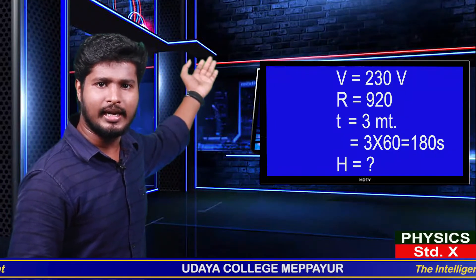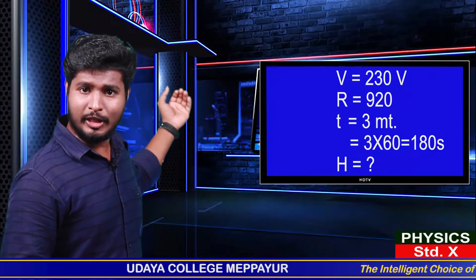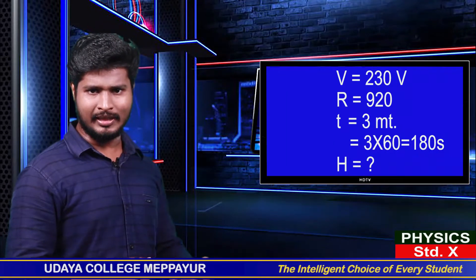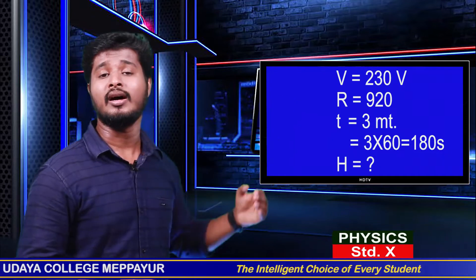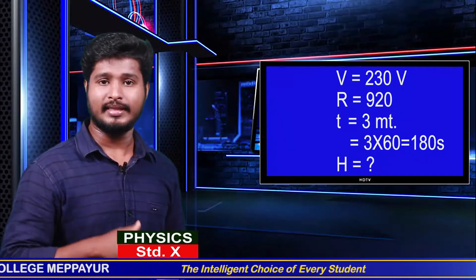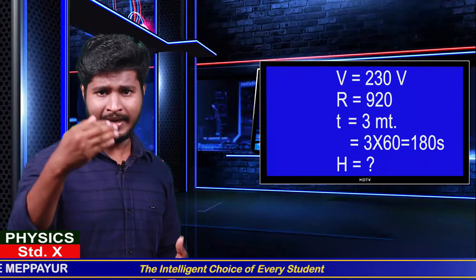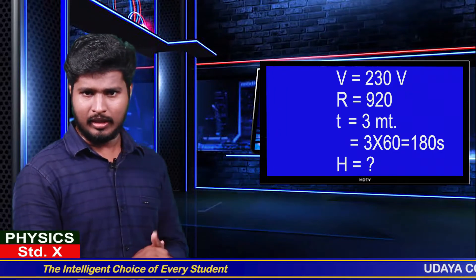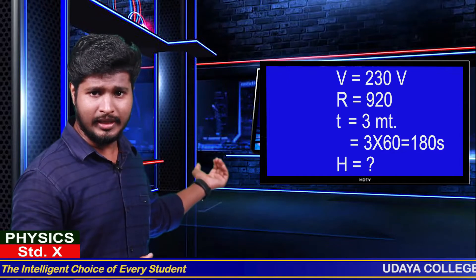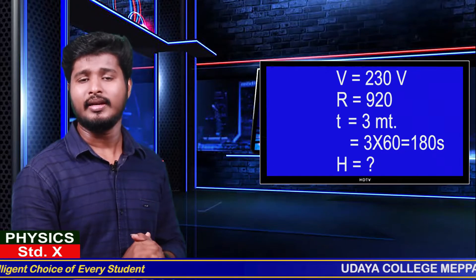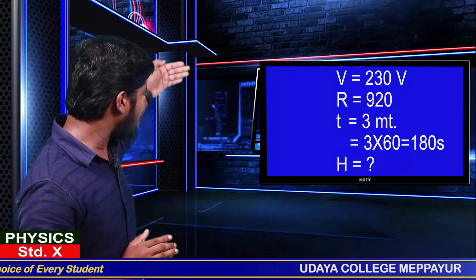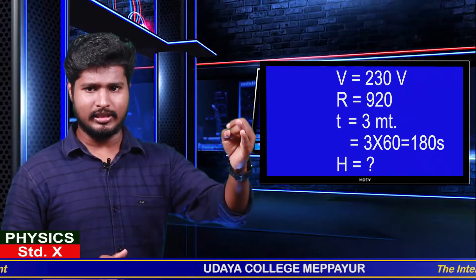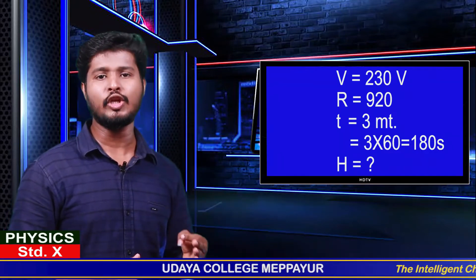V is equal to 230 volts. The current is 0.20. You can switch for 3 minutes. If we study the equations, we study three equations: H sum equals I²R, H sum equals IVT, and H sum equals V² times T divided by R.